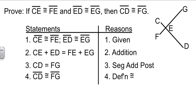Then we looked and said CE plus ED is the same as just CD to begin with. FE plus EG is the same as FG. So we used the segment addition postulate.